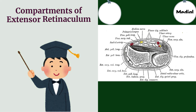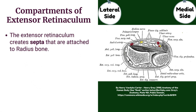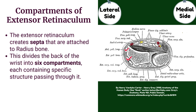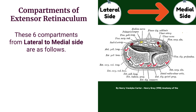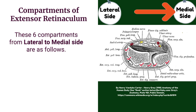Compartments of extensor retinaculum. The extensor retinaculum creates septa that are attached to the radius bone. These septa divide the back of the wrist into six compartments, each containing specific structures passing through it. These six compartments, from lateral to medial side, are as follows.